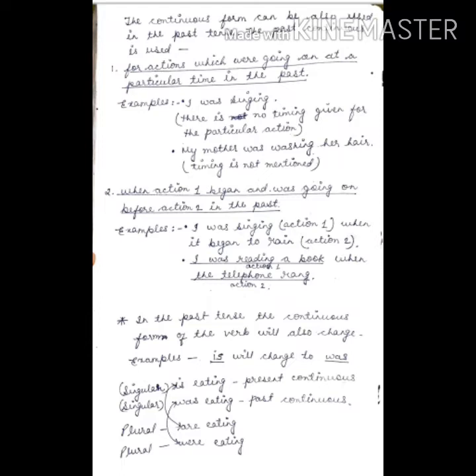'I was singing' means I was singing in the past. Here no timing is mentioned - there is no timing given for the particular action. Next one: 'My mother was washing her hair.' Here also no timing is mentioned but the action has been mentioned.